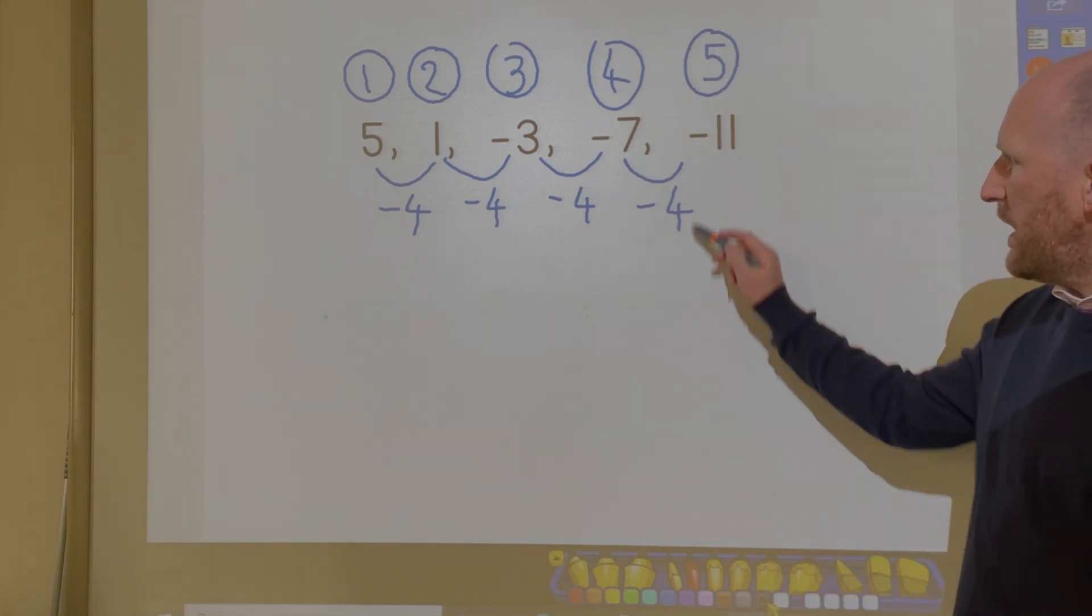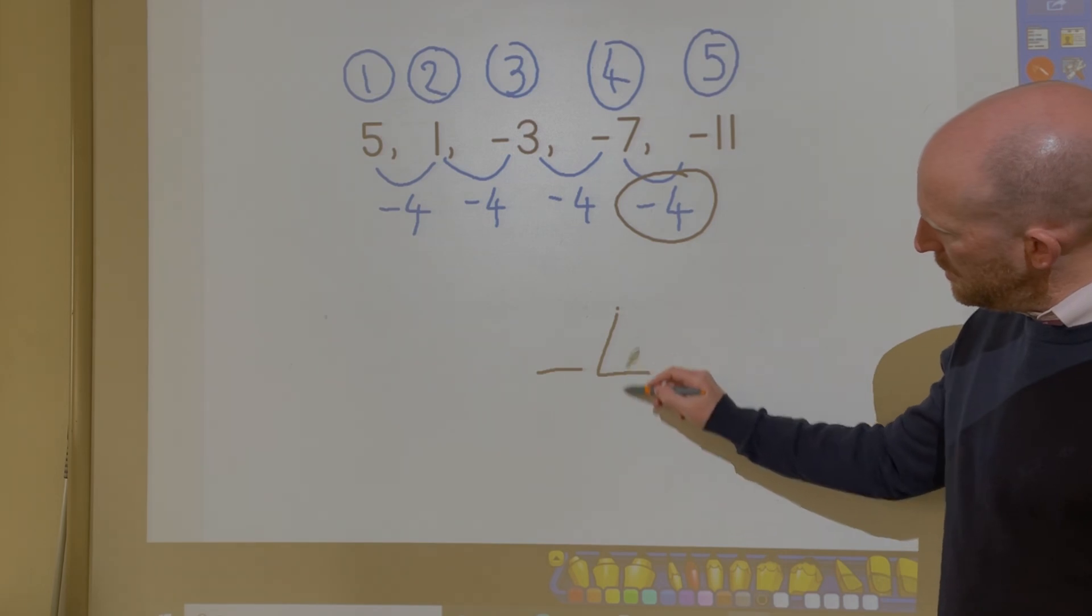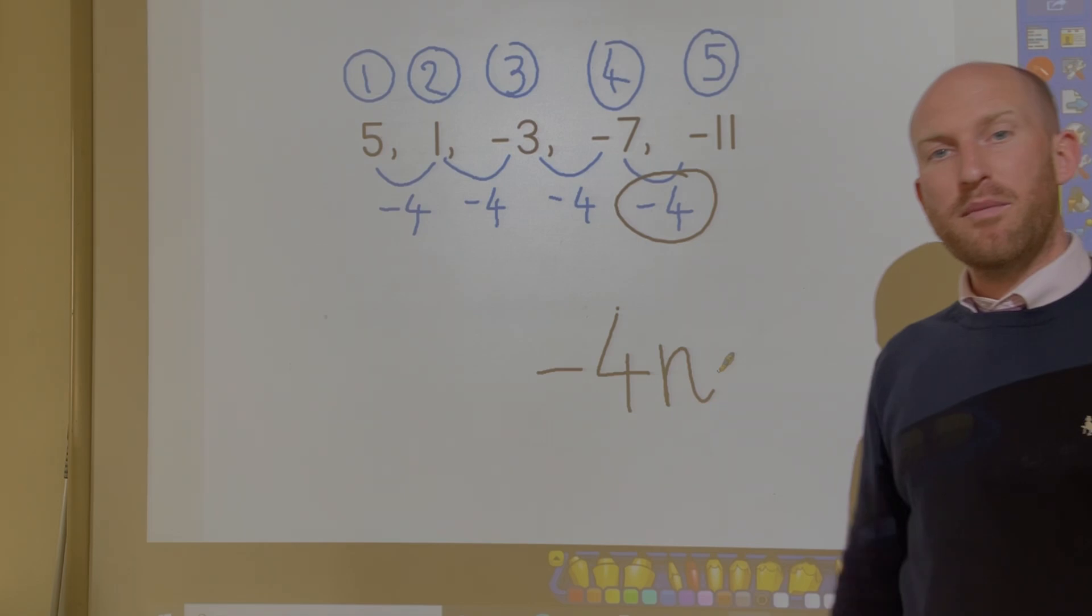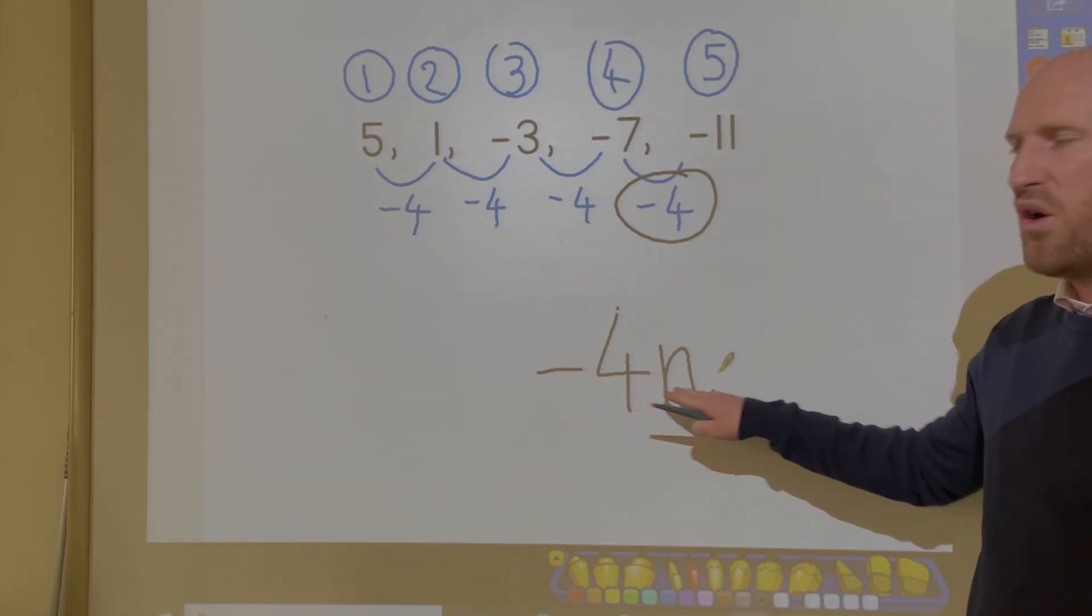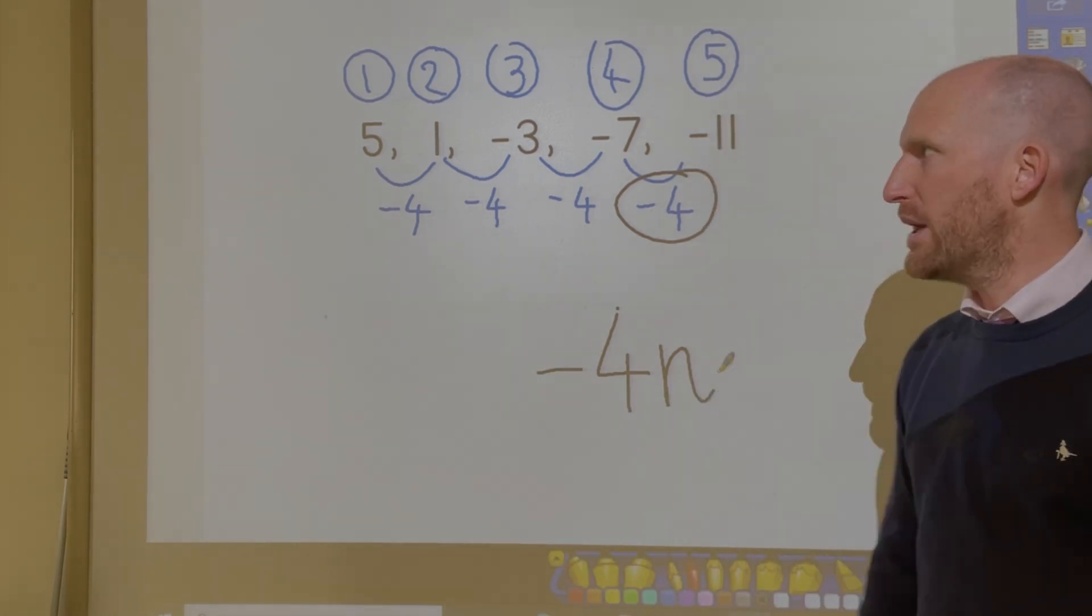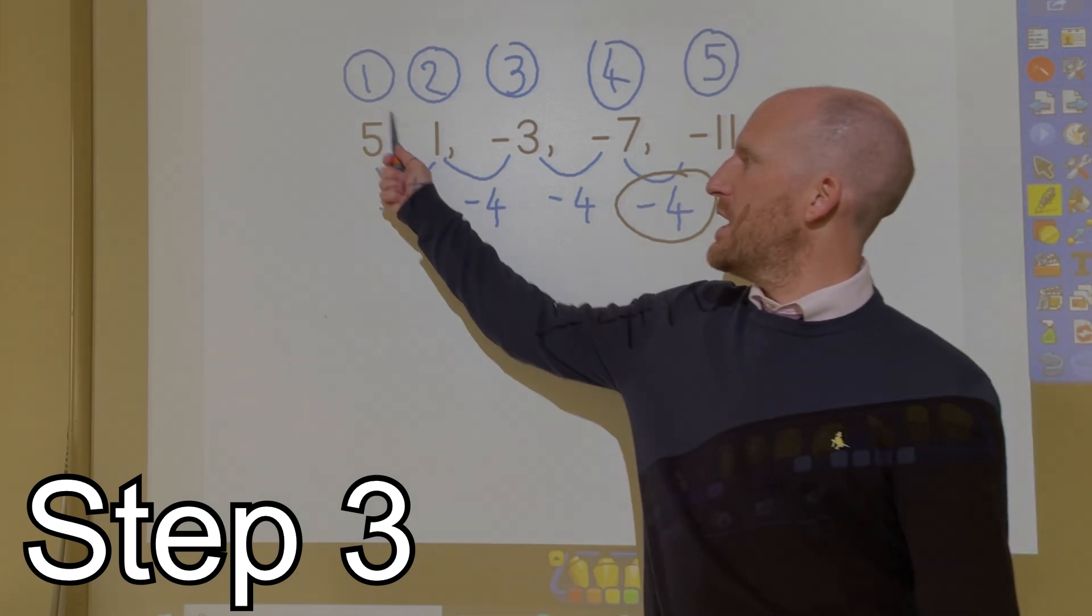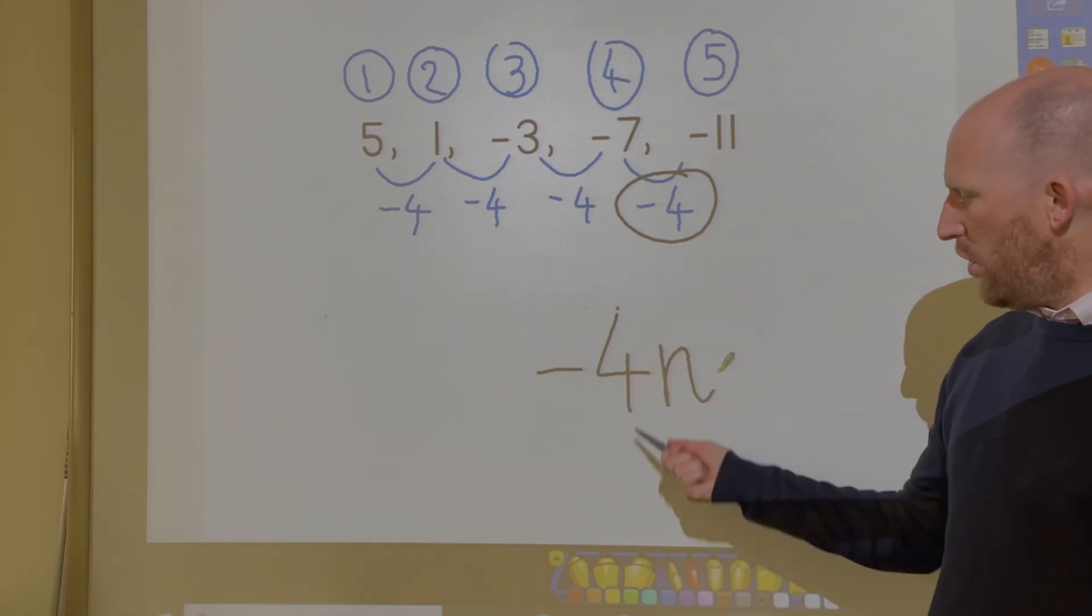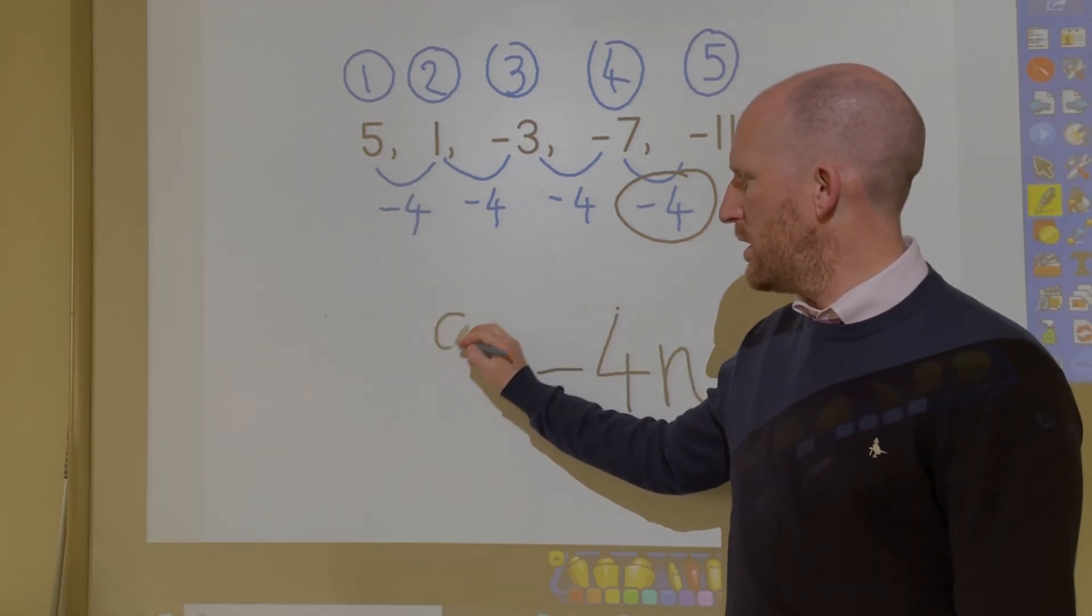So once I've done that, I can just take the difference and I can change that into the second part of my nth term, which is minus or take away 4n. Now I need to work out what my starting number is. And if you remember, my shortcut to work out the starting number is to take the first term and add 4. So see how it says 4n? 5 and 4 makes 9.